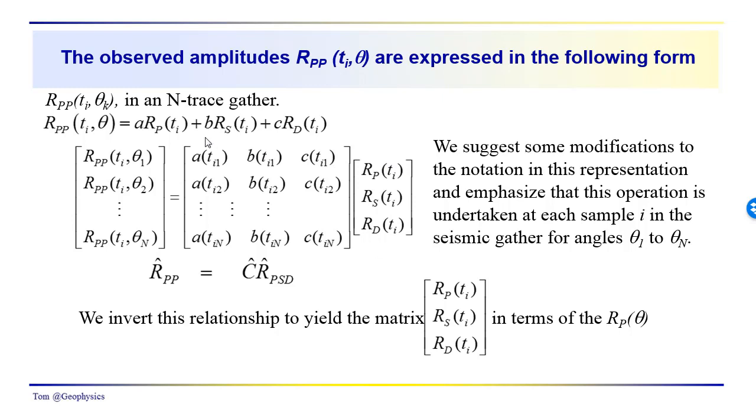We have these different terms which we're also subscripting. This would be the P wave reflectivity, shear wave reflectivity, density reflectivity at a particular time t sub i, and this would just be a simple matrix representation of what we see up here, identifying these matrices with a little hat on top.